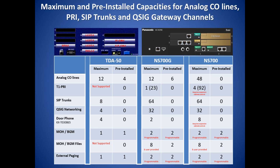This chart shows the capacities of CO, door phone, QSIG networking, music on hold, background music, and paging ports. PRI is supported by both the NS700 and the NS700G. The NS700G has two CO slots for two of three possible cards. It comes with an ELCOT-6 card, and there is one slot open for either another ELCOT-6, a PRI-23, or a door phone 2 card. The music on hold and paging ports on the NS700G are programmable to be either music on hold or external paging. By default, you have one music on hold and one external paging. In addition to the two internal music on hold background music files, you can add up to six WAV files for music on hold and background music.